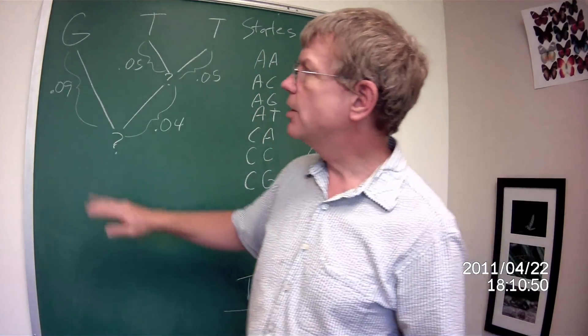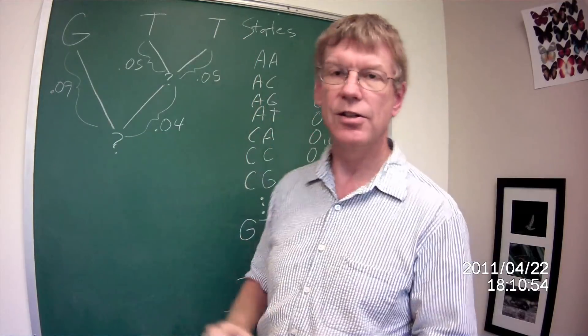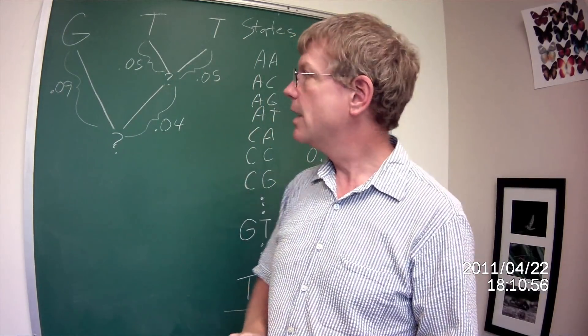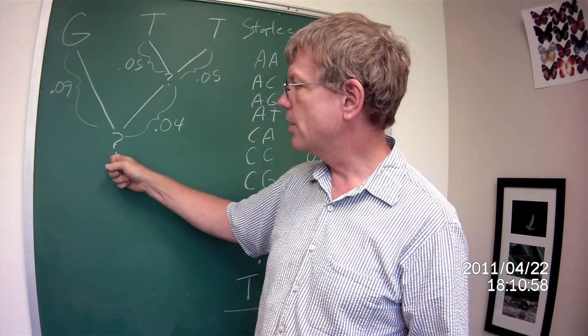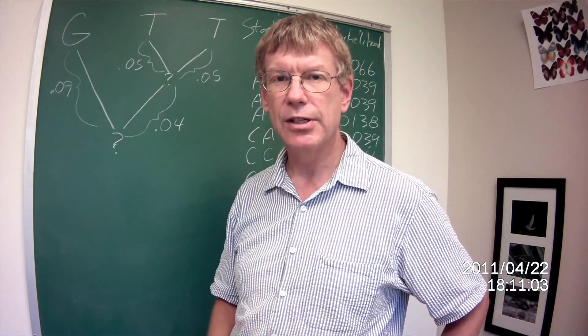Okay, we consider a data set that consists of G, T, and T. Those are the observed data. And what we're trying to figure out is what was the state at this node and this node. Those are the missing data.